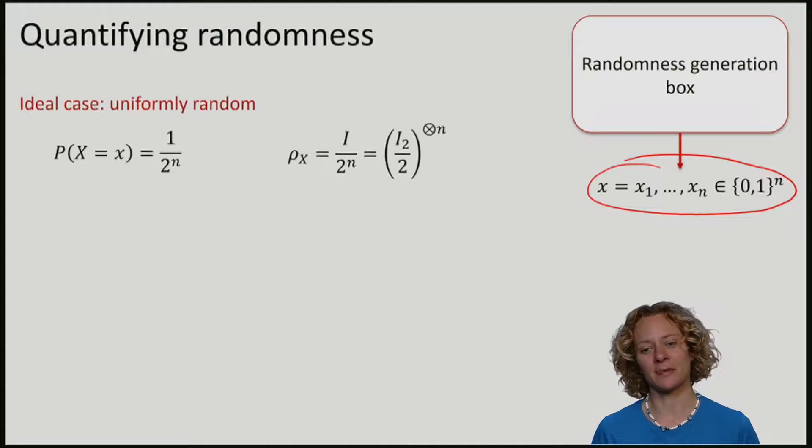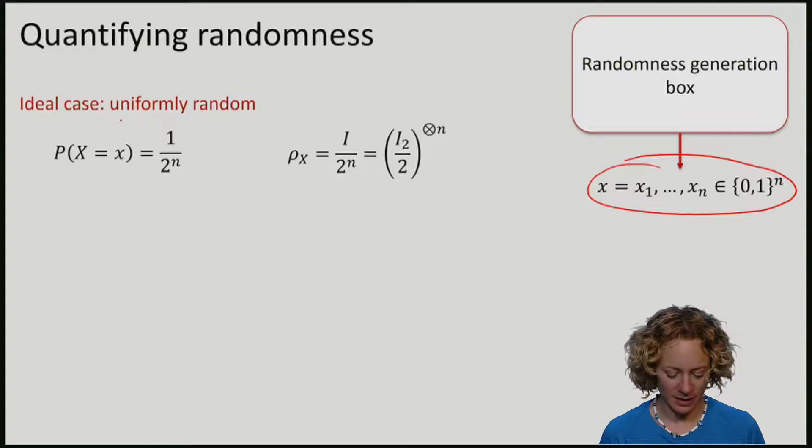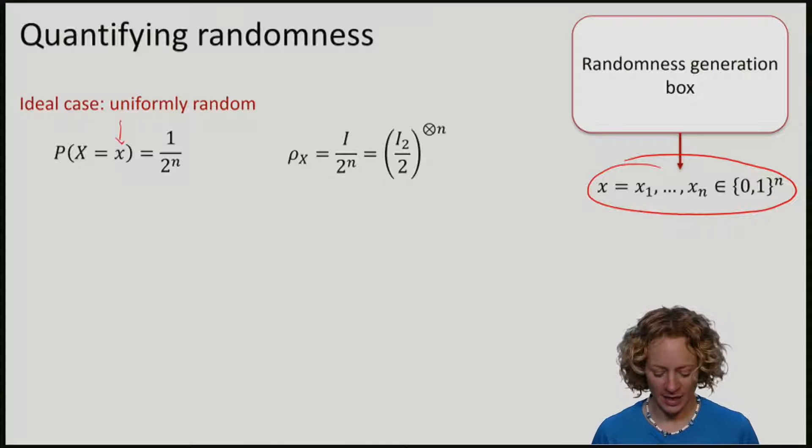Now, in the ideal case, the string would be uniformly random, meaning that the probability of obtaining a string x is 1 over the number of possible strings, namely 2 to the n where n is the length of the string. Or if I want to write the probability distribution as a quantum state, it is the maximally mixed state on n qubits.